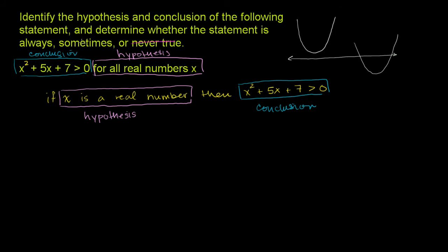To figure that out, let's find the y-value of the vertex. To get the y-value, we first need the x-value. The x-value of the vertex is given by the formula negative b over 2a. I normally don't like giving formulas, but we've shown this in multiple videos. And if you look at the quadratic formula, it comes straight out of that.